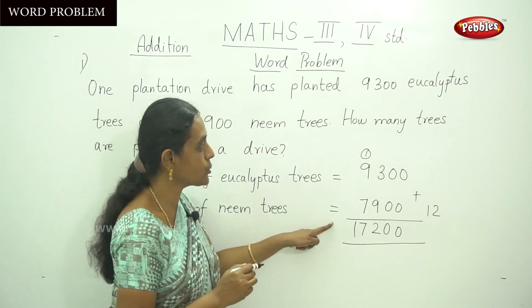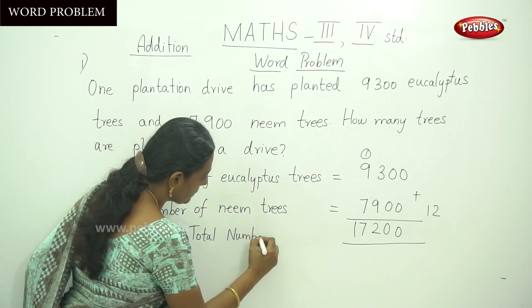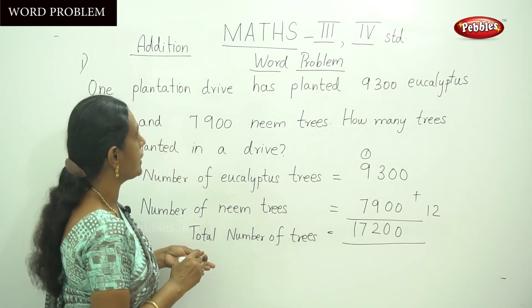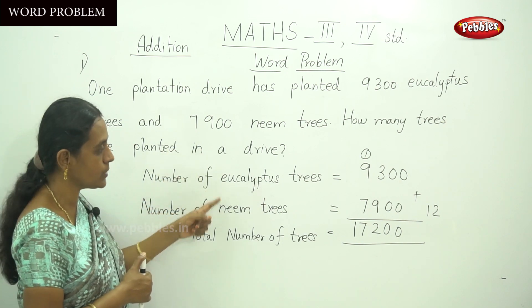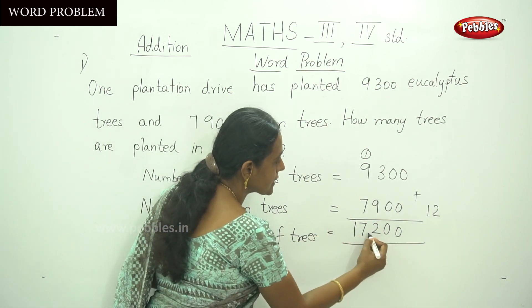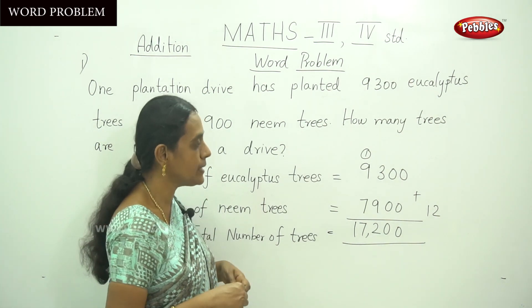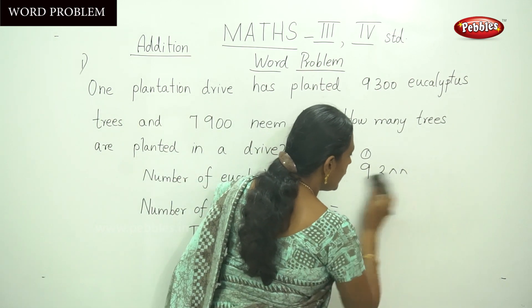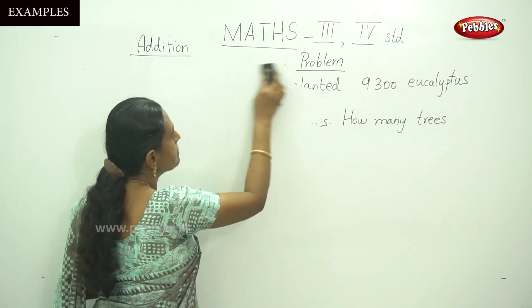So the total number of trees is 17,200. One plantation drive has planted 9300 eucalyptus trees and 7900 neem trees. The total number of trees planted in the plantation drive is 17,200. Now let us move on to the next example sum — that is arranging numbers with different digits and adding, which is a regrouping kind of addition.